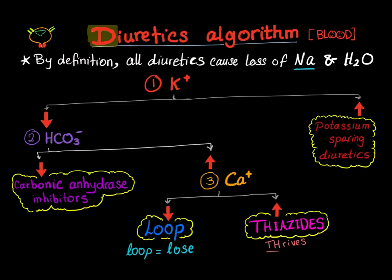Note that these diuretics will lead to either acidosis or alkalosis. Starting with carbonic anhydrase inhibitors — they lead to loss of bicarbonate in the urine. Bicarbonate is basic, is alkaline, so the loss of the base is acidosis. Therefore, carbonic anhydrase inhibitors will lead to acidosis.